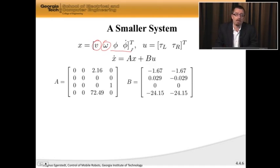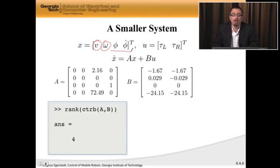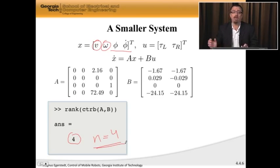If I do that, I get a 4 by 4 system with the following A and B matrices. Again, the actual numbers aren't that important. I go to MATLAB, I write rank controllability matrix, I get the answer being 4, and in this case, n was equal to 4. So if I shave off the unicycle base from my system, I get the completely controllable system. Now I can start controlling it.